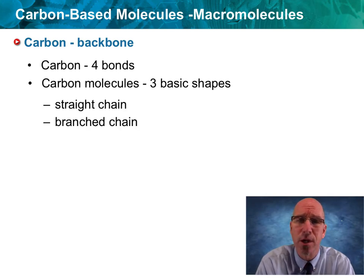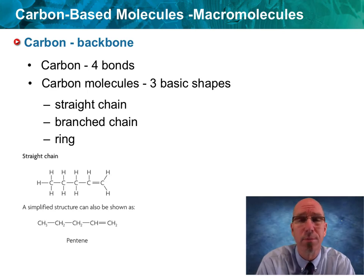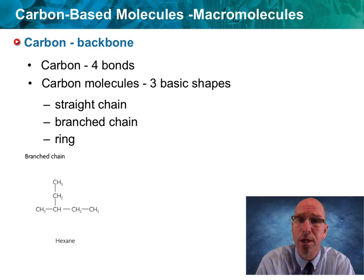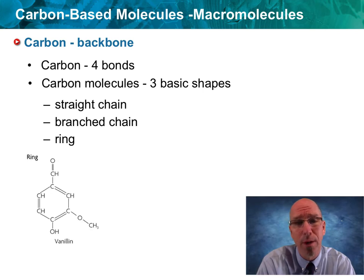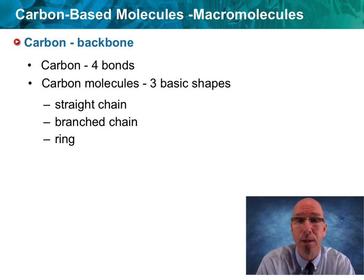Carbon molecules have three basic shapes: straight chains, branched chains, and rings. Here's a molecule that shows the straight chain — the lines between the carbons and hydrogens represent bonds, and you'll notice some carbons have two lines between them, meaning double bonds. Here's a branched chain, so it can fork and still remain a macromolecule. And here's a ring — here's vanillin, which gives cookies that vanilla-y taste. So that's a ring molecule.